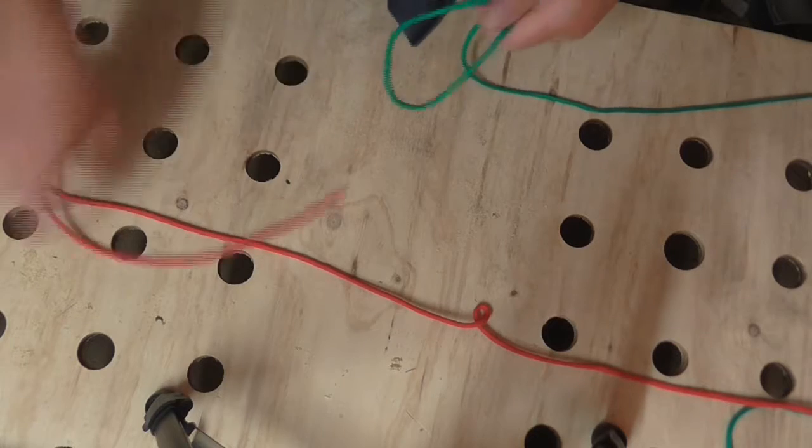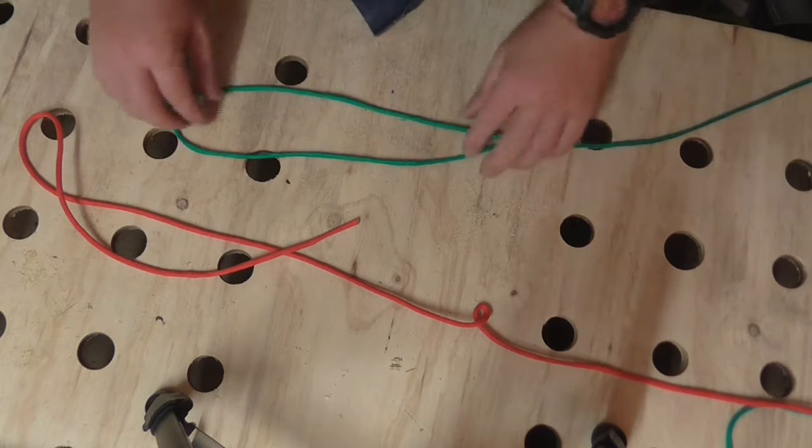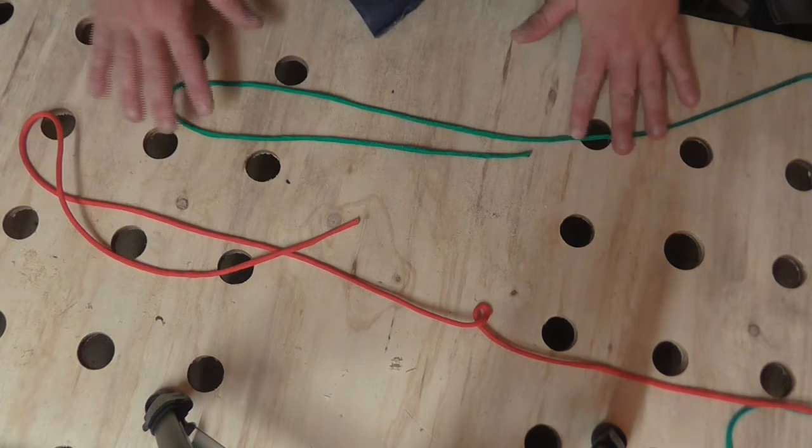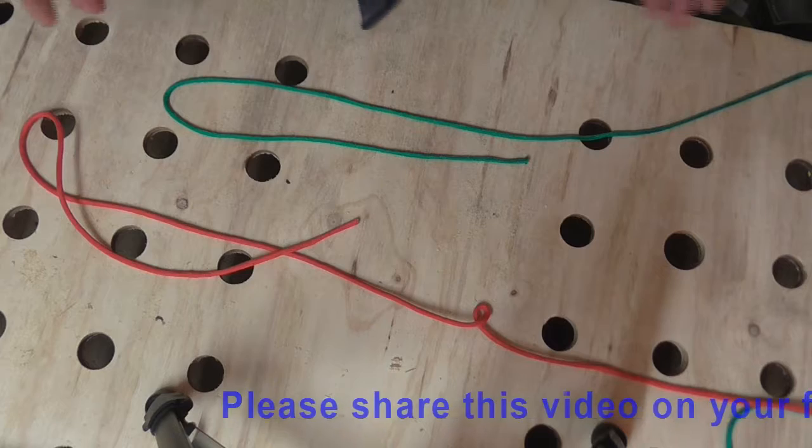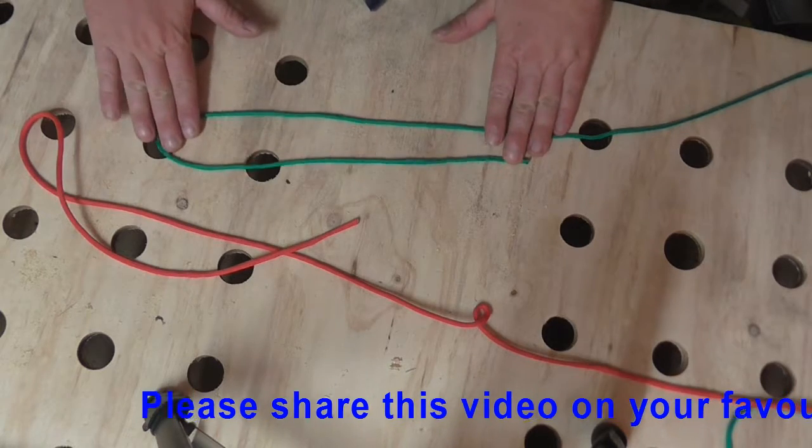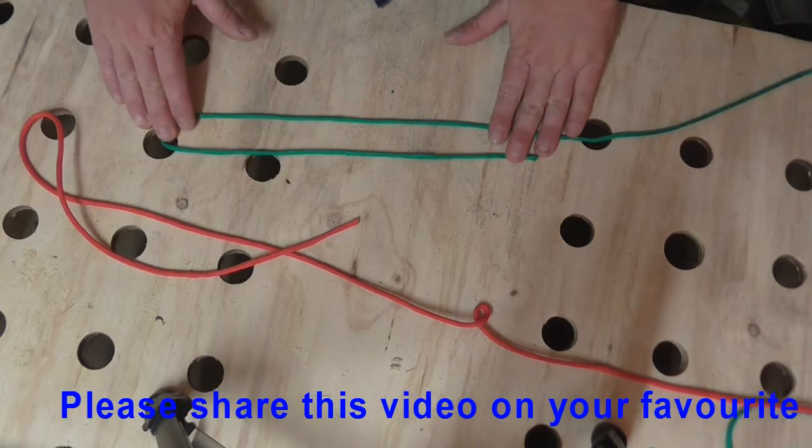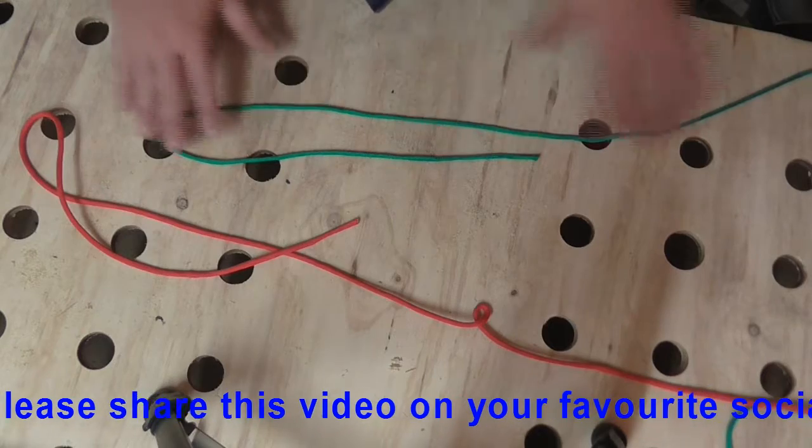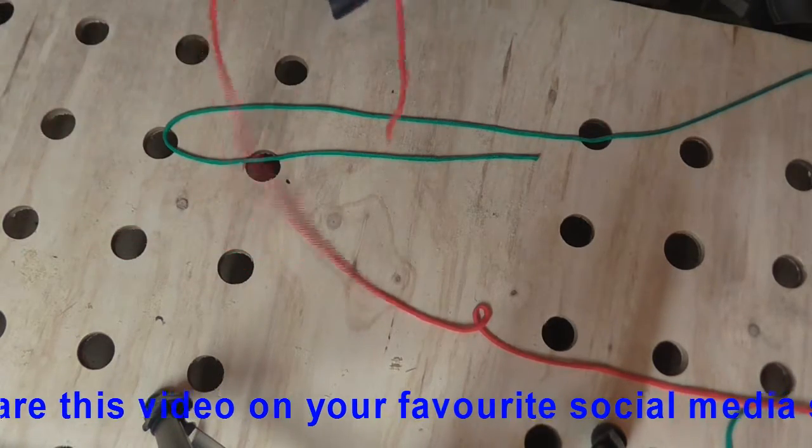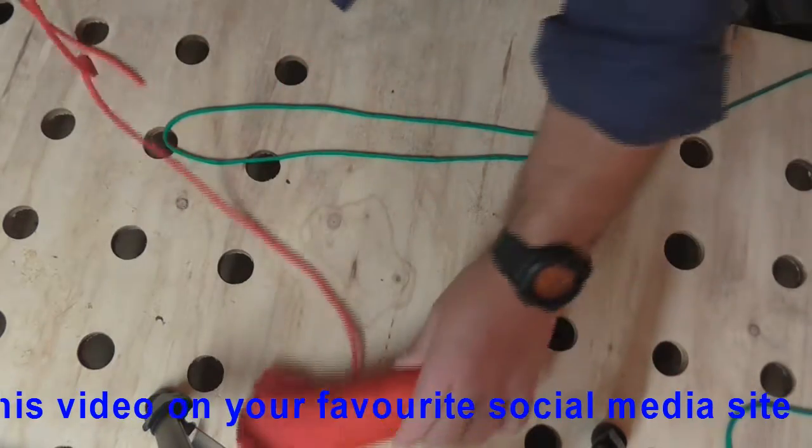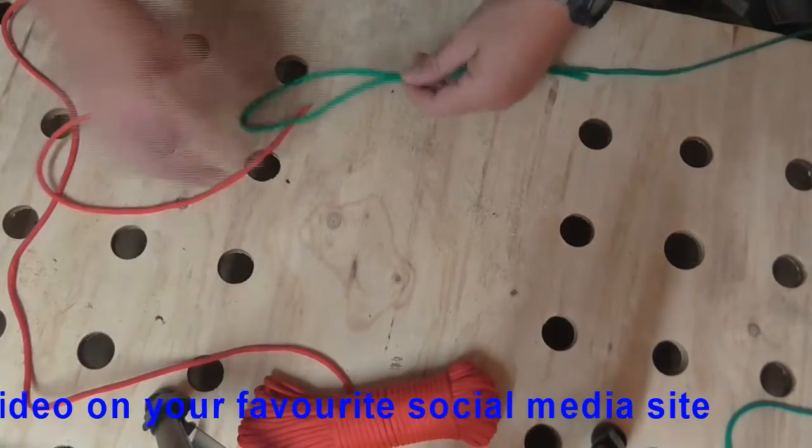Alrighty, now all I've got to use at the moment are two pieces of, so this is like a woven nylon cord or 550 or parachute cord. This is going to represent the leader, this is the monofilament leader, the green line. And the red line is going to represent the braid.